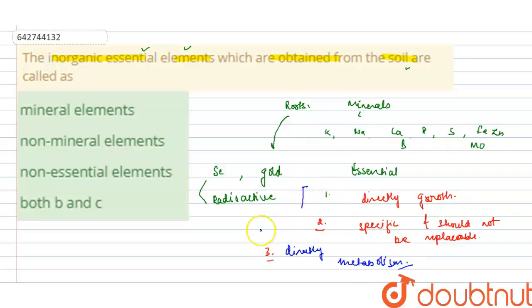So inorganic elements, the essential elements which are obtained from the soil are called as the mineral elements. These are known as the mineral elements. And why they are essential? Because of these three reasons.